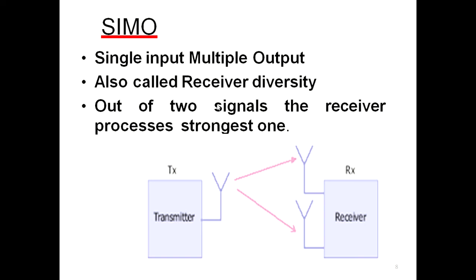The third one is SIMO — Single Input Multiple Output. We have now seen SISO and MISO. SIMO means placing a single antenna at the transmitter while increasing the number of antennas at the receiver.